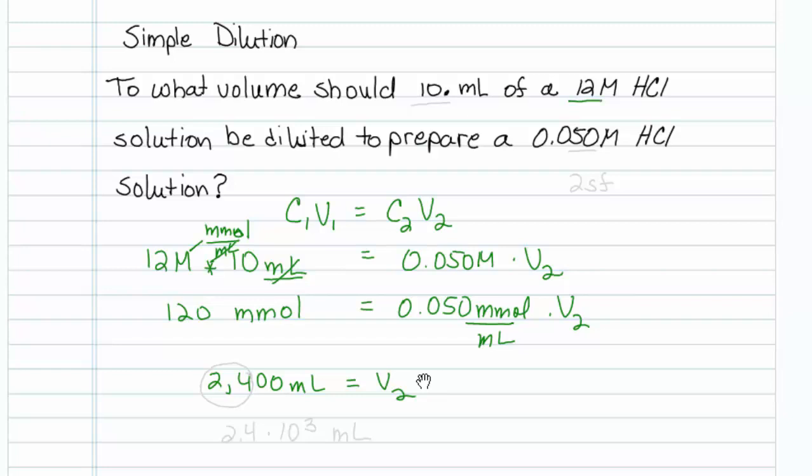It looks like every last one of our values that we're given is to 2 sig figs, so we really ought to report this to 2 sig figs as 2.4 times 10 to the third mls.